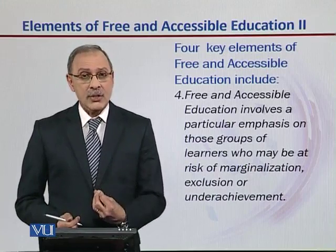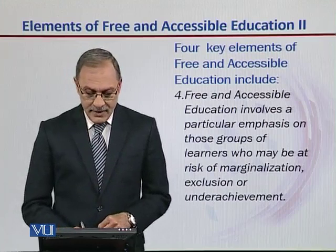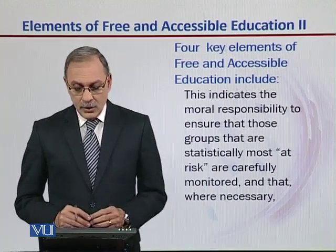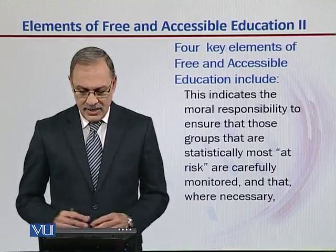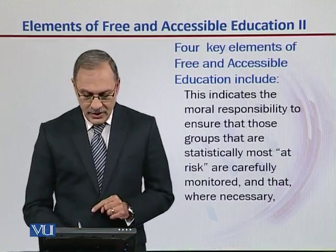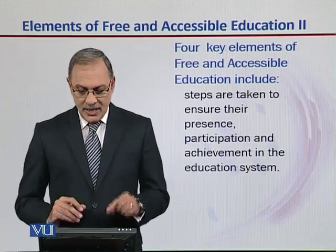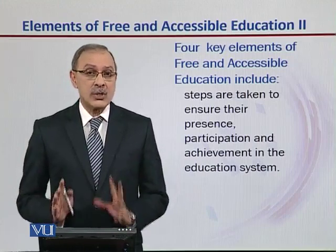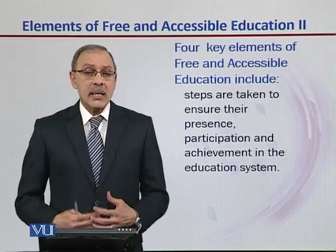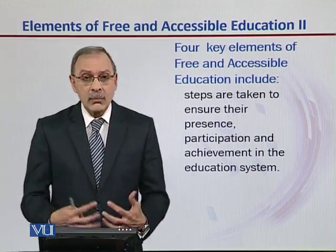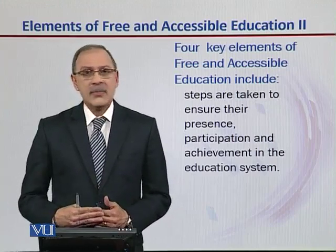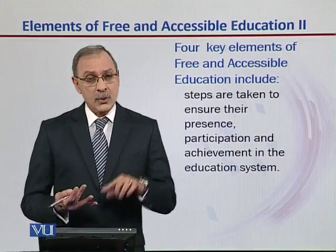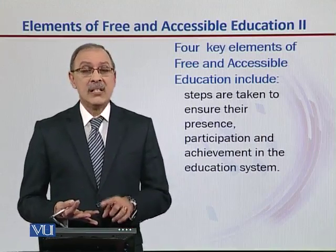Free and accessible education guarantees that even those students will receive that kind of education. This indicates the moral responsibility to ensure that those groups statistically most at risk are carefully monitored and that, where necessary, steps are taken to ensure their presence, participation, and achievement in the educational system. These so-called at-risk students may be really bright, but if a teacher doesn't work with them, work around them, or work for them, they will continue to remain at risk. Those at-risk students also need to participate and achieve — in other words, be successful.